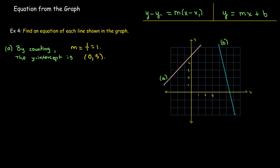And then we can see that the intercept is at (0, 5), the y-intercept. So I know that b equals 5. And so my equation is y equals 1x plus 5. But 1x is the same as just writing x, so y equals x plus 5.